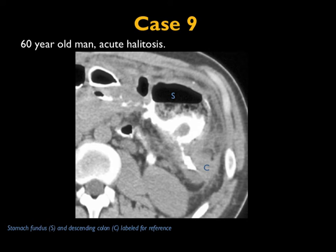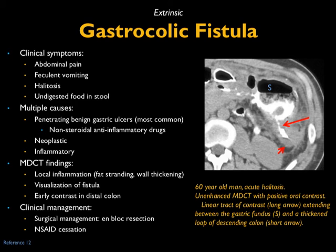Another case: patient with severe halitosis. Because of the halitosis, there was concern about a fistula to an adjacent organ, which is why positive contrast was given. You can see very nicely a fistula between the stomach and the colon — a so-called gastrocolic fistula. Patients present with a range of symptoms including abdominal pain, fecal vomiting, halitosis, and undigested food in the stool. Penetrating gastric ulcers are the most common cause, but it can also be due to inflammatory or neoplastic processes in the colon — more commonly a primary colon process than a primary gastric one. Local inflammation, fat stranding, and visualization of the fistula are the CT findings. These patients will benefit from surgery.